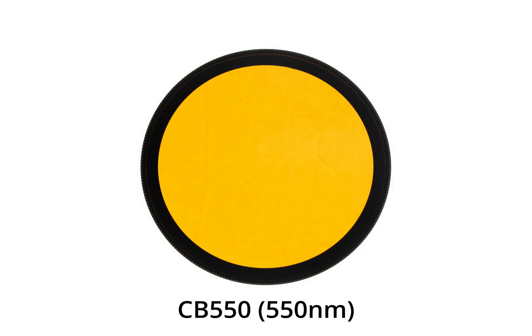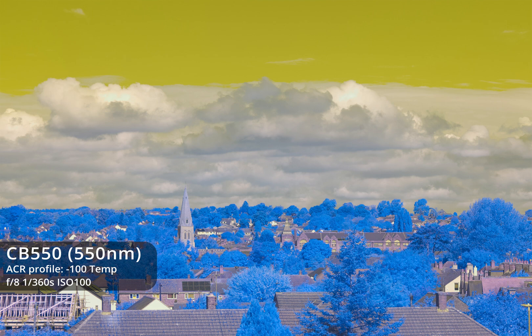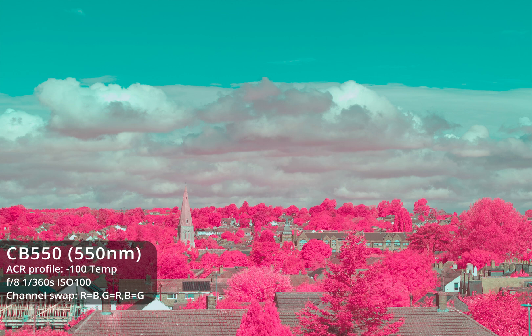The CB550 is a slightly lighter orange filter that cuts light below 550nm. Doing an EIR channel swap gives a very similar result to the CB565 with bright pink foliage and a teal sky. Using a 143-degree hue shift also gives pretty much the same result as the CB565 with blue sky and red foliage.